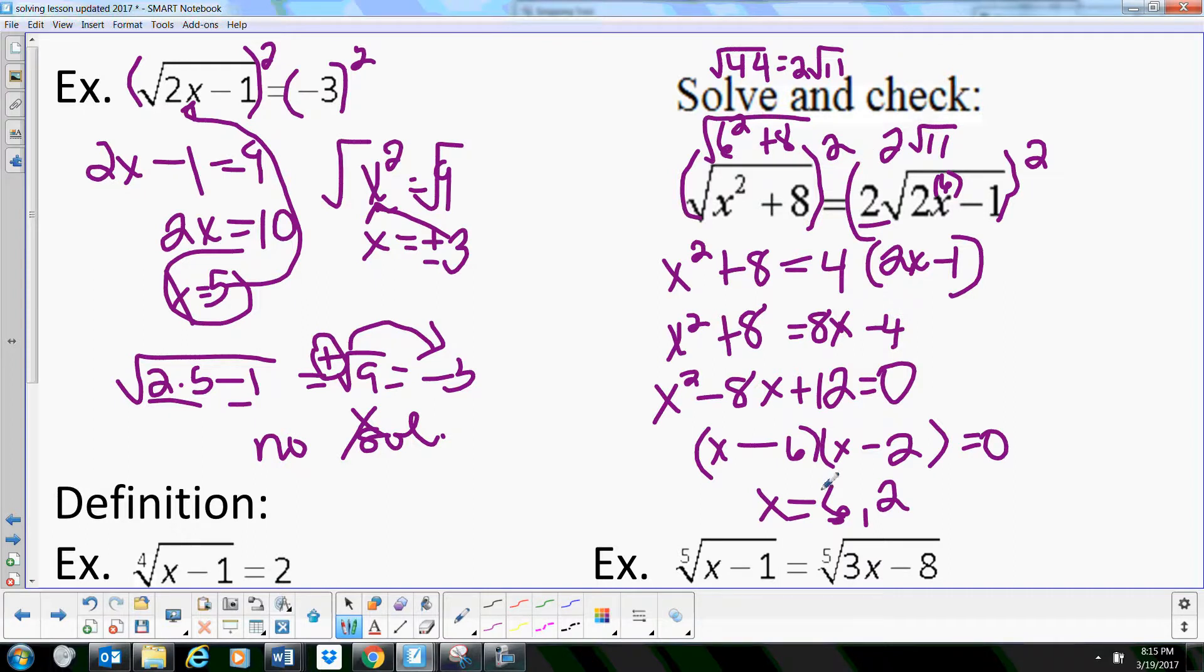And then let's plug a 6 in here and we get 12 minus 1 which is 11, so we also have a 2 root 11. Okay, so it looks like 6 is going to check for us, it works.